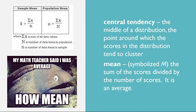The mean of a distribution, symbolized m, is the sum of the scores divided by the number of scores. As a formula: m equals the sum of x over n, where the summation sign is the Greek letter sigma, meaning to sum across the values of the variable x, and n represents the number of scores. The mean is by far the most common measure of central tendency. It usually provides a good indication of the central tendency of a distribution and it's easily understood by most people. In addition, the mean has statistical properties that make it especially useful in doing inferential statistics.